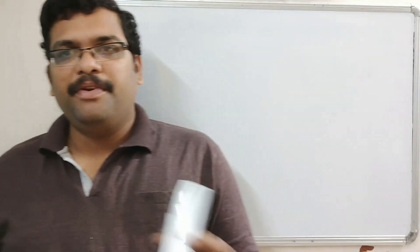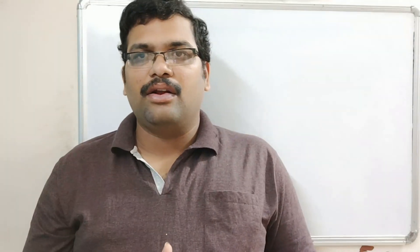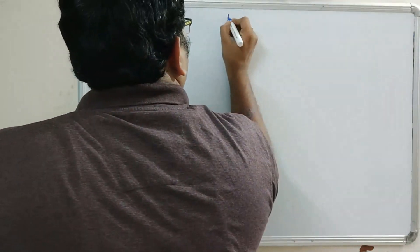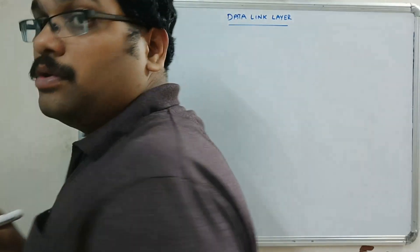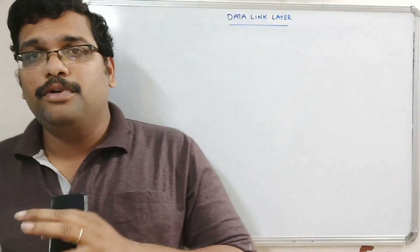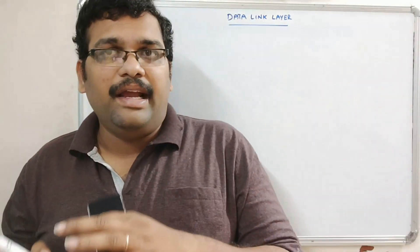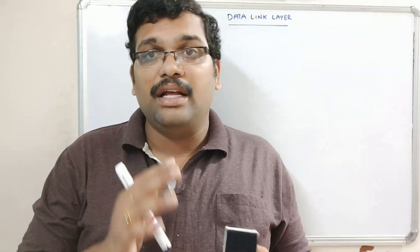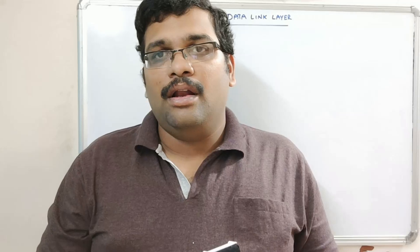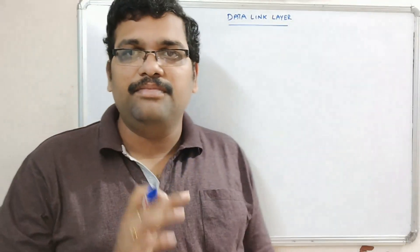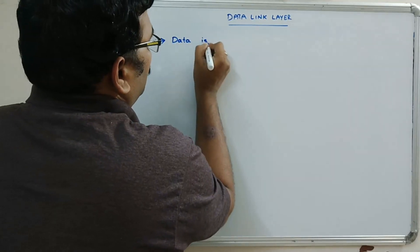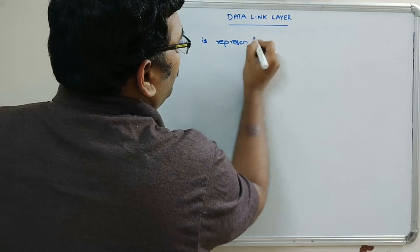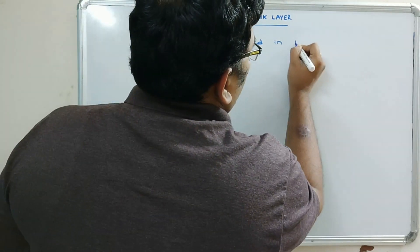Hello friends, welcome back to our channel. In the previous session we saw the first layer of OSI layer architecture — the physical layer. Today's session will cover one more layer: the data link layer. In the physical layer, the physical connection between two devices is established and data is in the form of bits — zeros or ones. In the data link layer, data is represented in terms of frames, so the bits will be converted into frames.